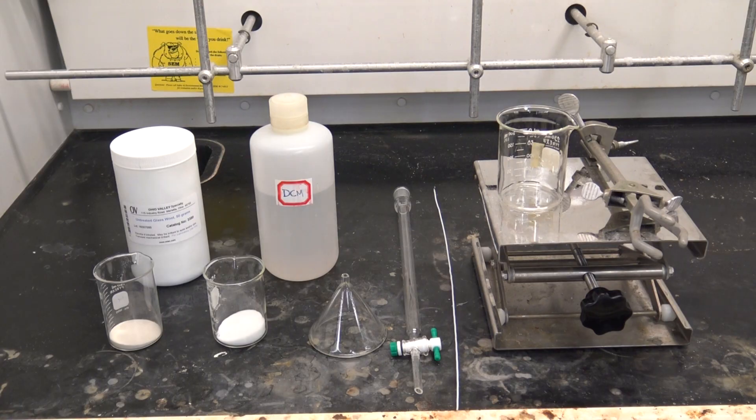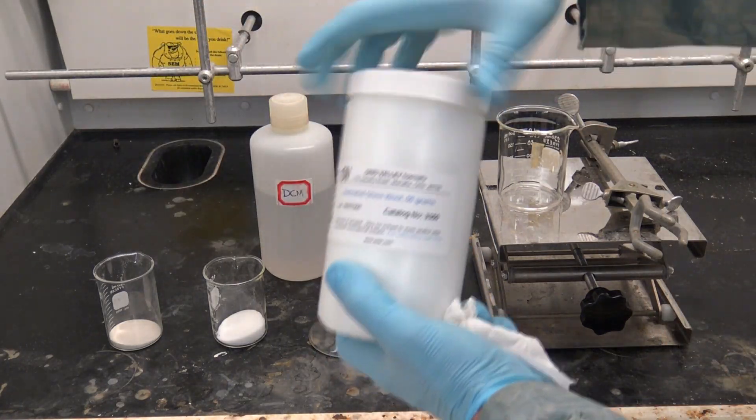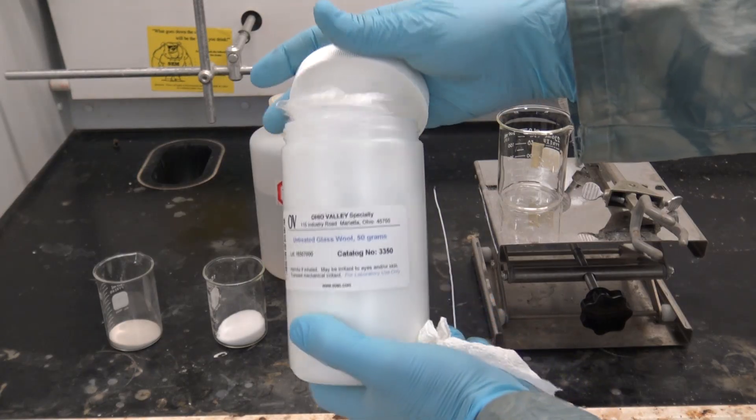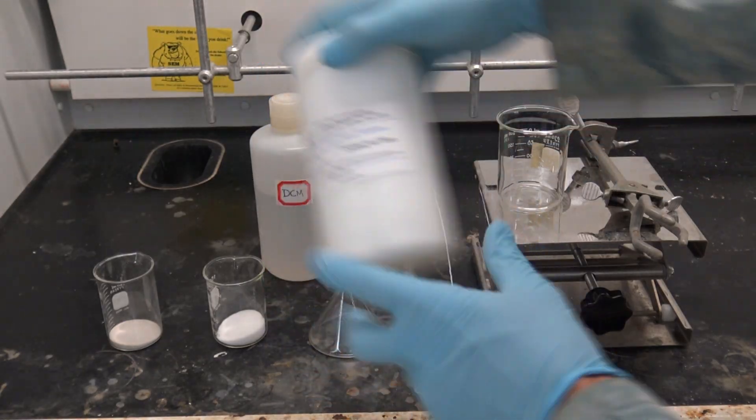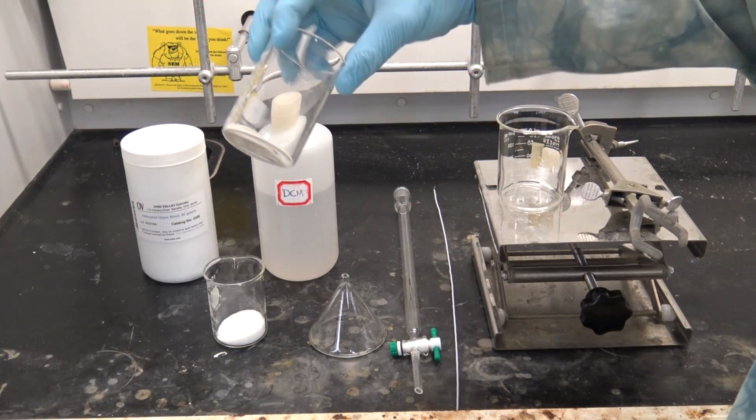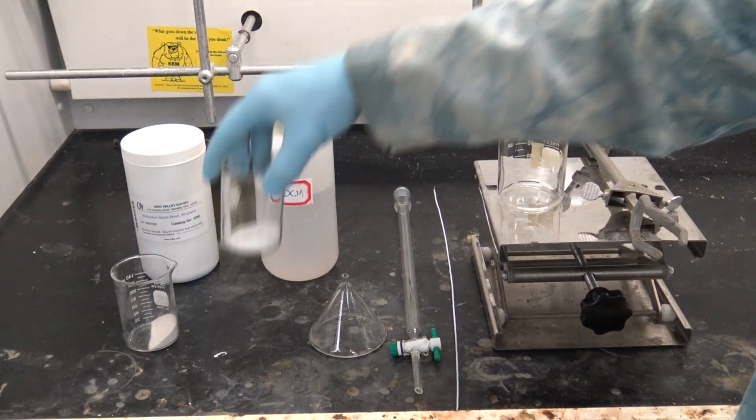In order to create our column, we're going to need a few things. The first of these is glass wool, a very fine fibrous form of glass that's going to prevent solids from moving through our column. We're also going to need some chromatography sand, which is just nice pure sand, that's going to provide a level base on which to build our silica gel column.